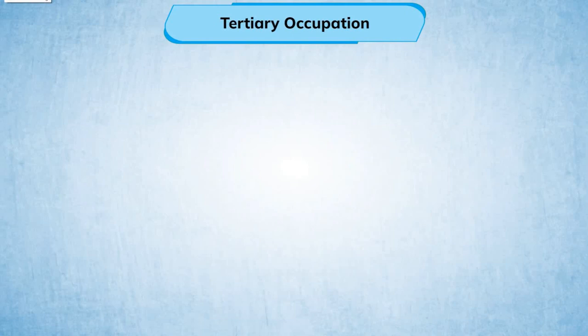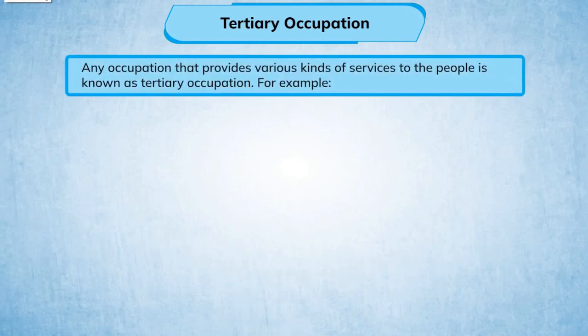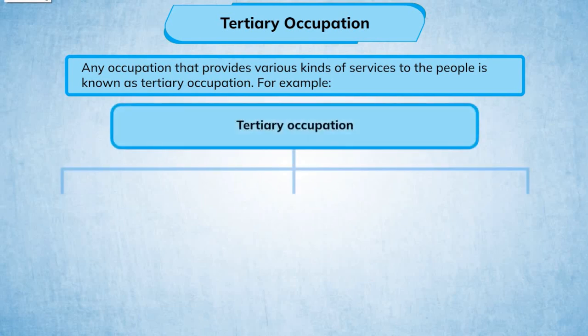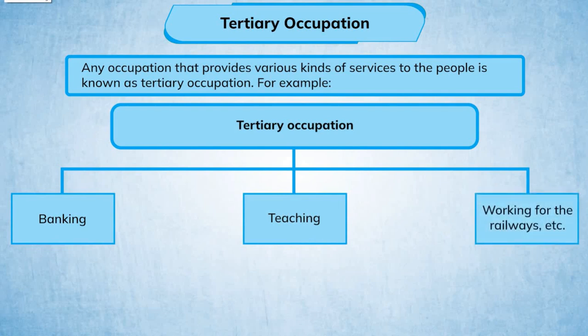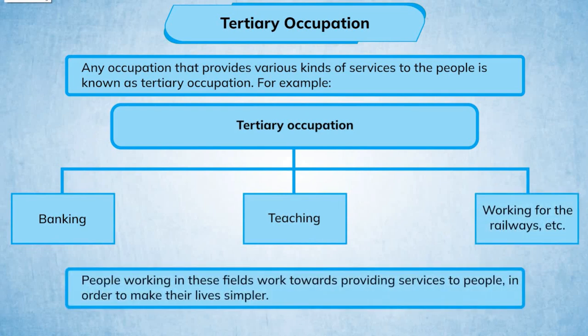Tertiary occupation: Any occupation that provides various kinds of services to the people is known as a tertiary occupation. For example, banking, teaching, working for the railways, etc. People working in these fields work towards providing services to people in order to make their lives simpler.